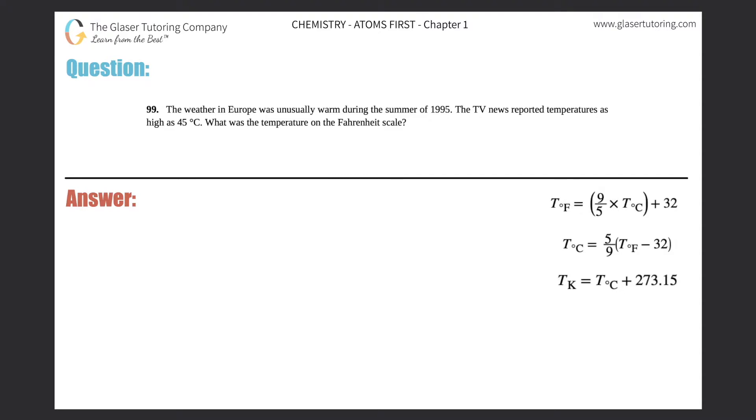Number 99, the last question in chapter one. The weather in Europe was unusually warm during the summer of 1995. The TV news reported temperatures as high as 45 degrees Celsius. What was the temperature on the Fahrenheit scale? All right, so this one is just a clear-cut conversion. They gave a temperature in Celsius and we need to figure it out in Fahrenheit.